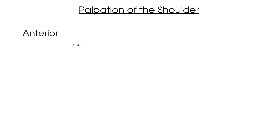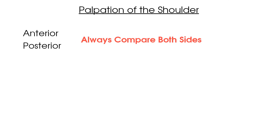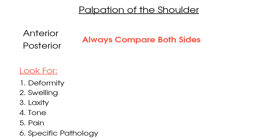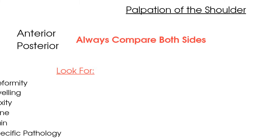Here are the key points to summarize palpation of the shoulder joint: break down your palpation into an anterior and posterior view, ensuring you compare affected and unaffected sides. When palpating, look for deformity, swelling, laxity, tone, and most importantly pain. You can also look for signs of specific pathology in each view as mentioned throughout the video. Thanks so much for watching — check out our other Clinical Physio videos on observation of the shoulder joint or active range of motion testing.